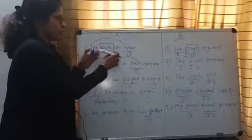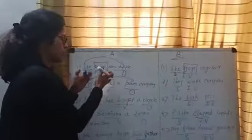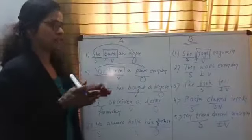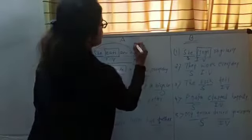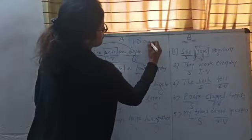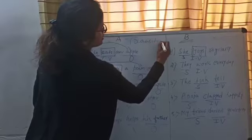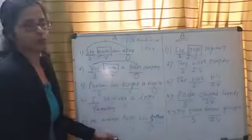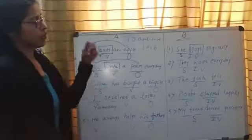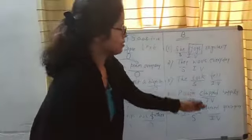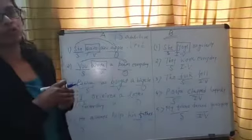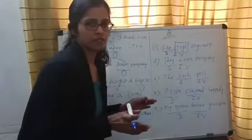Since this particular verb has a direct object to receive the action performed by the subject, this verb is called a transitive verb. All these verbs in Column A are examples of transitive verbs. In Column B, all these verbs — jogs, work, fell, clapped, danced — all of these are perfect examples of intransitive verbs.